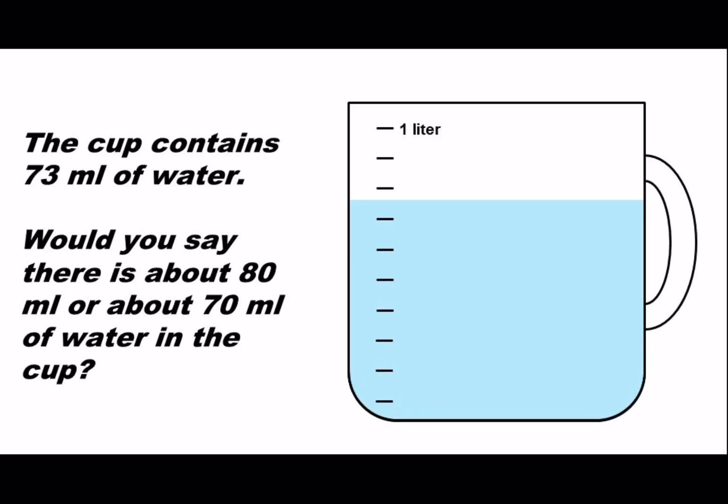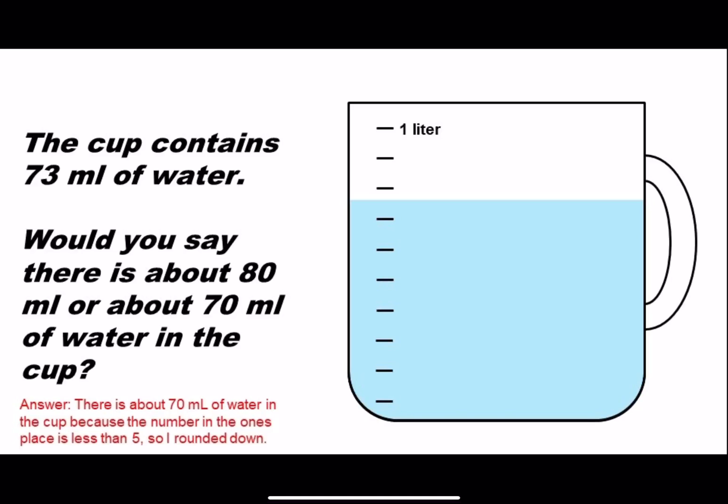The cup contains 73 milliliters of water. Would you say there is about 80 milliliters, or would you say there is about 70 milliliters of water in the cup? There is about 70 milliliters of water in the cup because the number in the ones place is less than five, so I rounded down.